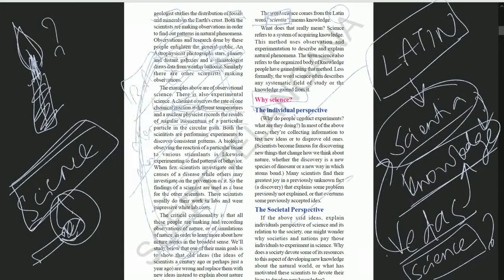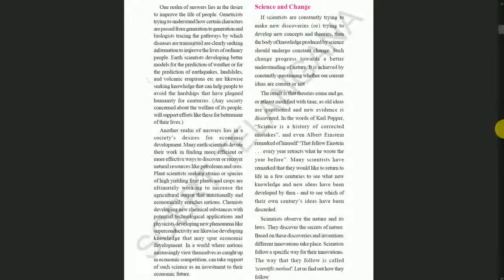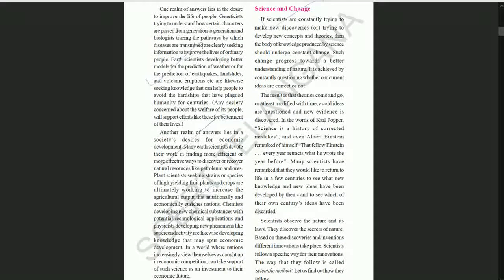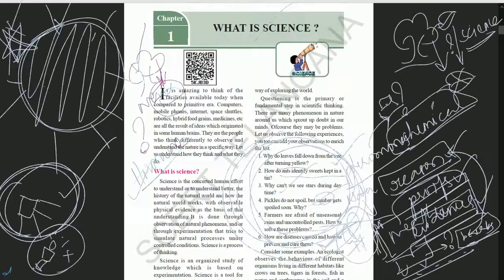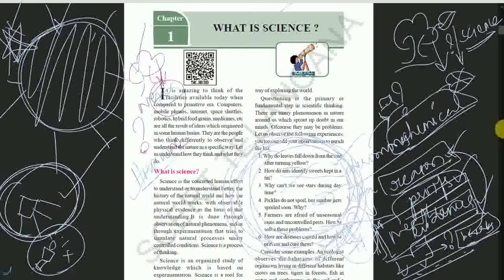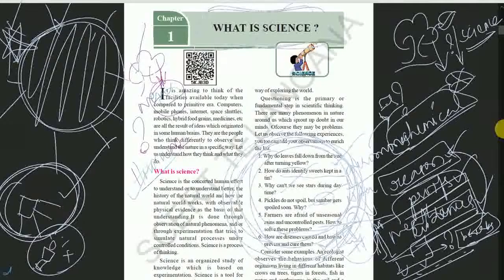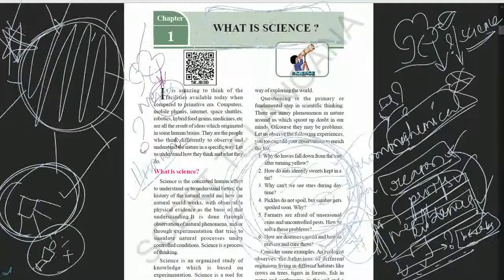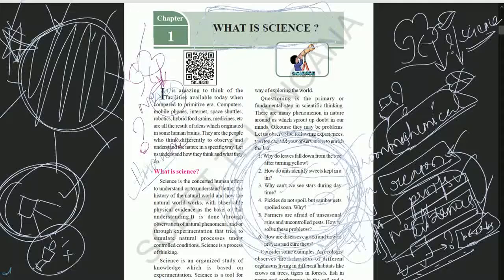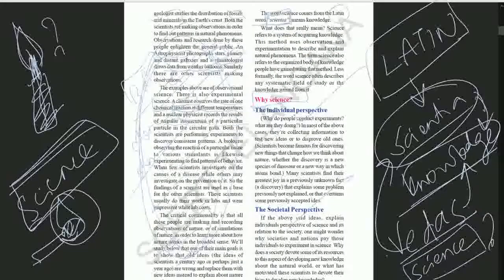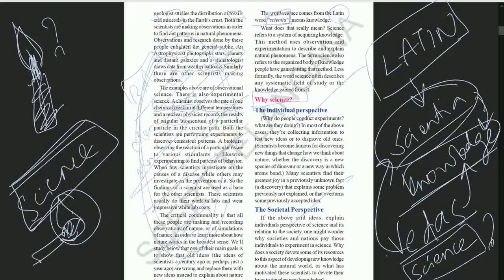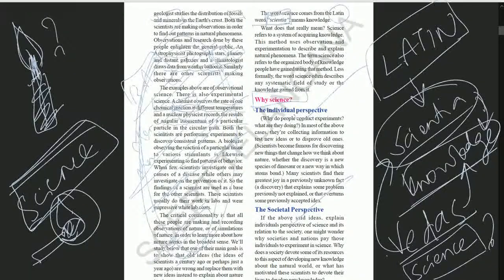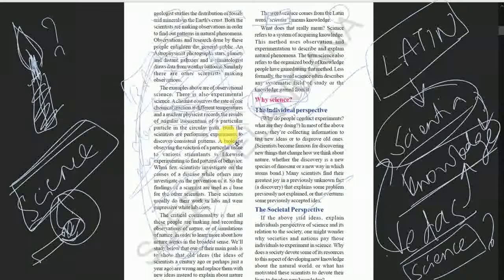In the next class we will discuss societal perspective and different things in science. Today we discussed the index, the branches of science, what is science, and some questions. In your homework, you need to put that in your fair notes. Write a heading, write these questions and answers that we discussed now. After that, write the branches I showed you. Pause the video somewhere and write the branches. Then wait for the next class. We will complete it soon. What I said about social perspective and remaining topics we will discuss.